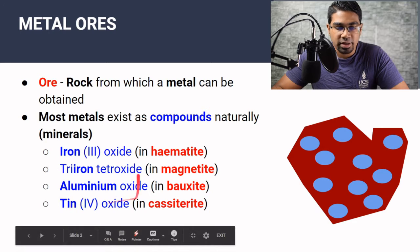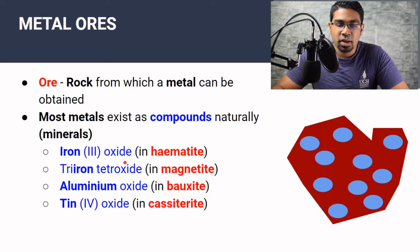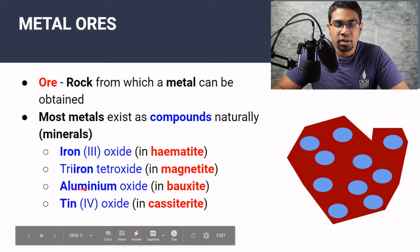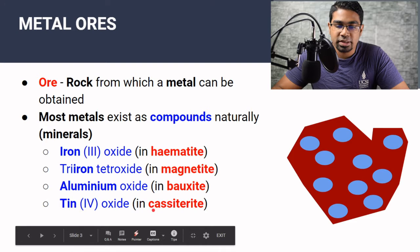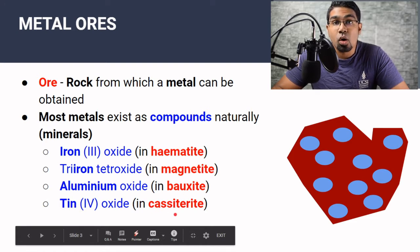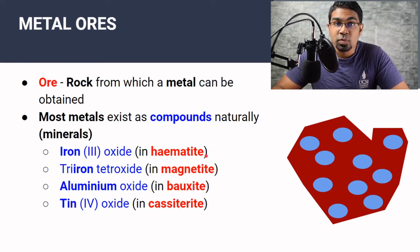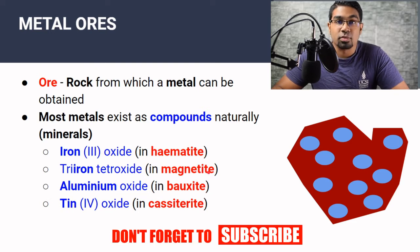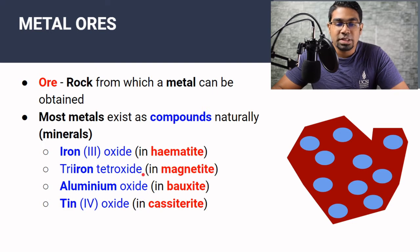These are some of the metals that exist naturally. Iron(III) oxide, tri-iron tetroxide — this is magnetite, this is hematite. Aluminium oxide is bauxite and tin(IV) oxide is cassiterite. The words in red are the ores — that means they are the rocks. For example, hematite is a rock which contains iron(III) oxide. Magnetite is a rock which contains tri-iron tetroxide. This is how they exist naturally in nature.